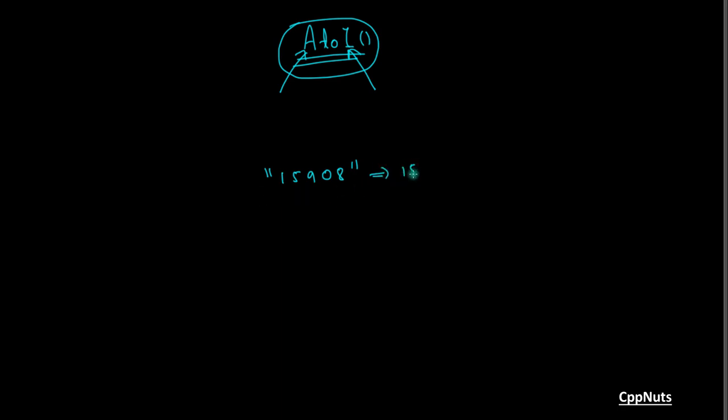You can now apply any addition, minus, multiplication, and all those arithmetic operations on this because this is integer. You cannot do all those things here because this is a character pointer. So we want to convert this to this.